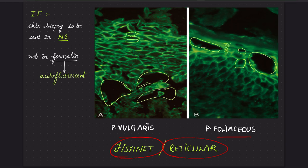When you send a skin biopsy sample for histopathological examination — for routine H&E stains under light microscopy — it can be sent in formalin, as biopsy samples are usually sent in formalin. However, for immunofluorescence, skin biopsy samples should never be sent in formalin, because formalin itself is autofluorescent. Therefore, for immunofluorescence, skin biopsy should be sent in normal saline.